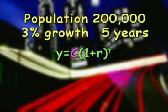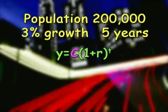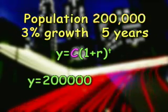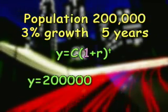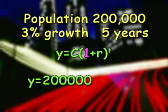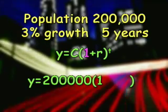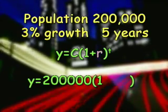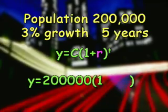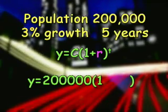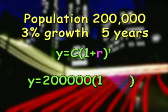C is the initial amount, which in this case is the population of 200,000. The 1 is part of the formula representing the whole amount at any given time. The r is the annual rate as a decimal. 3% as a decimal is three hundredths.